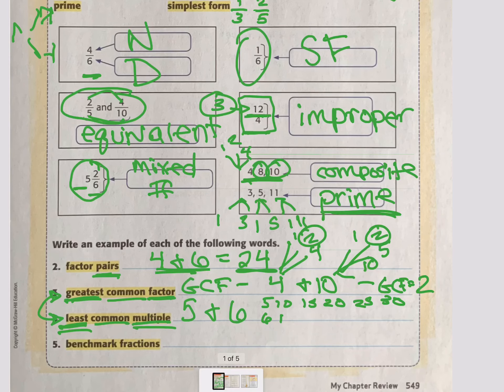When I skip count by 6, I go 6, 12, 18, 24, 30. What's the smallest number they have in common? 30. So there, LCM would equal 30.